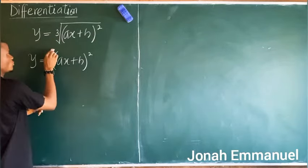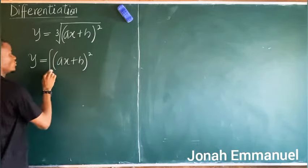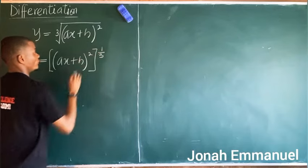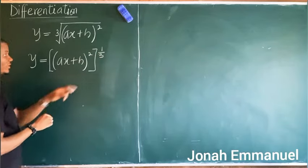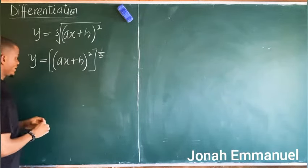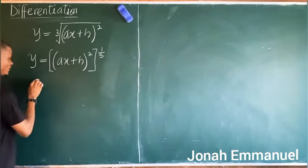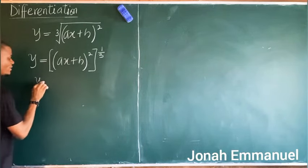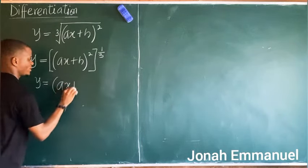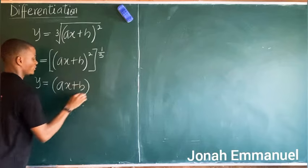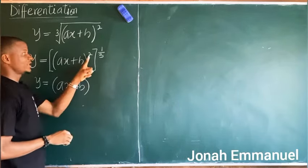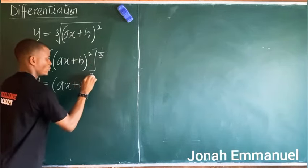So taking the cube root of this expression, it becomes (ax + b) to the power one over three. Then from the concept of indices, this one-third multiplies the existing power of two to give two over three.